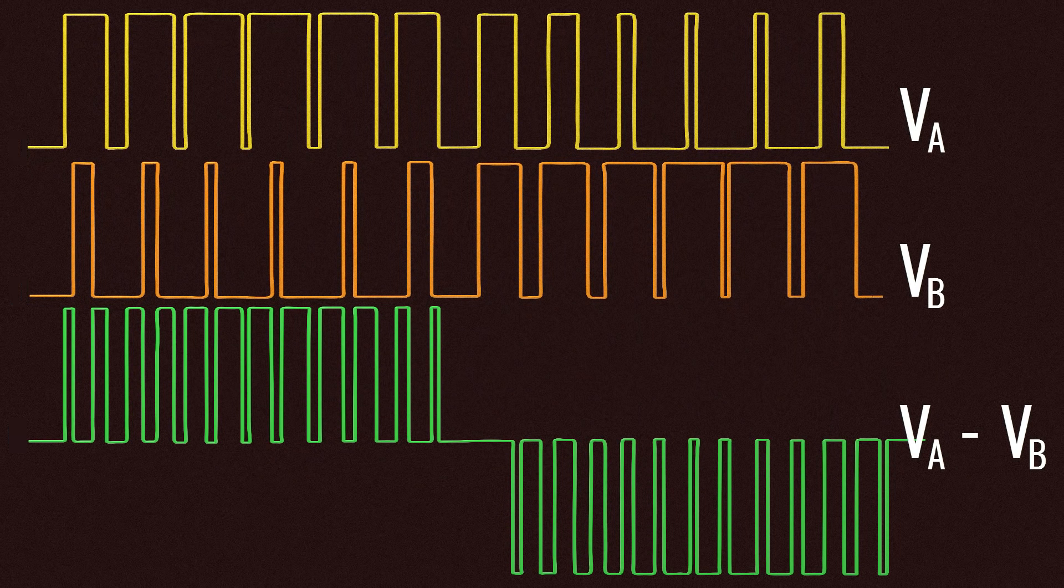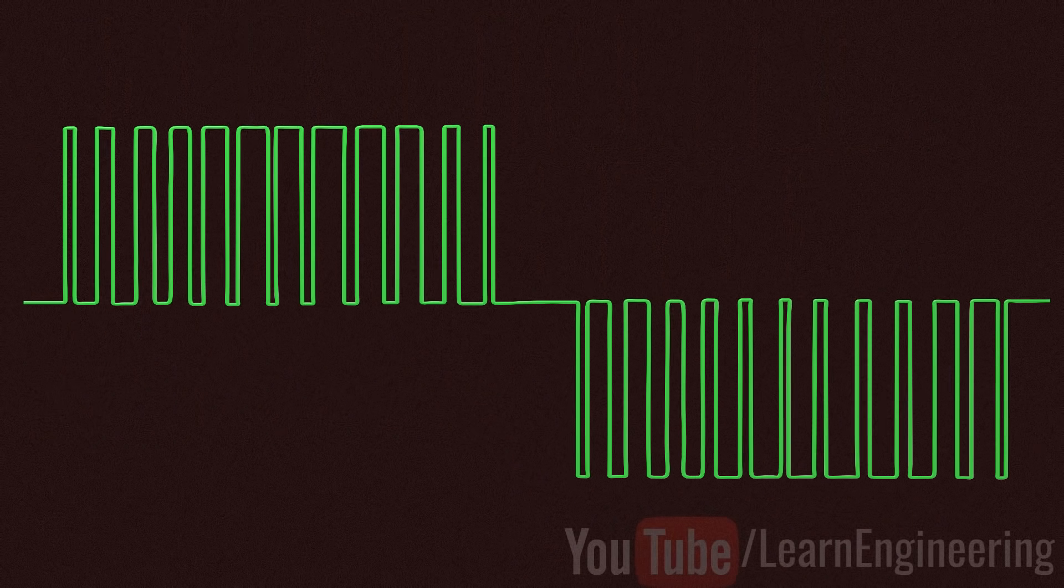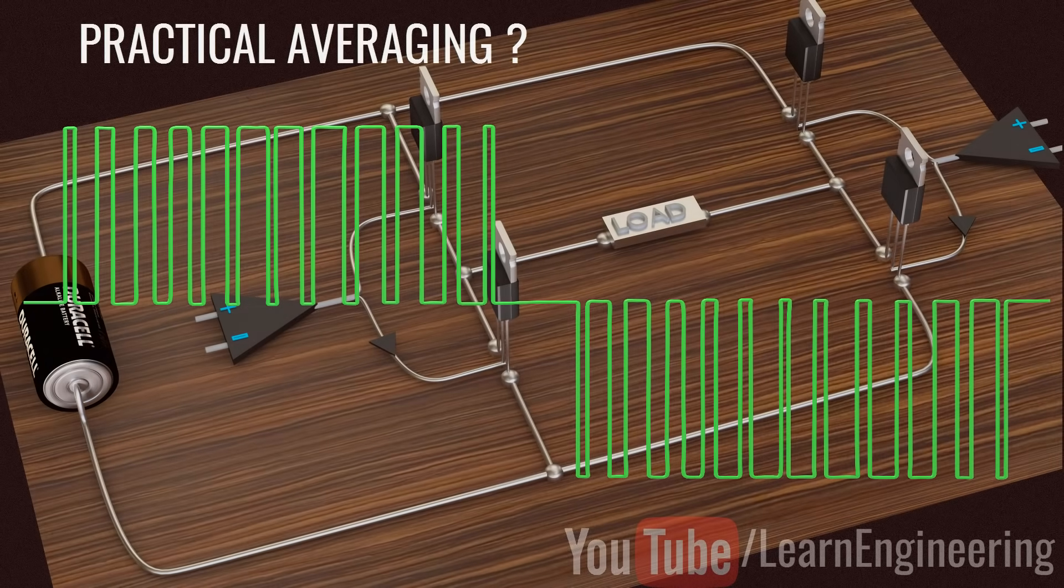The finer the triangular wave, the more accurate the pulse train will be. Now, the next question is, how do we practically implement the averaging?